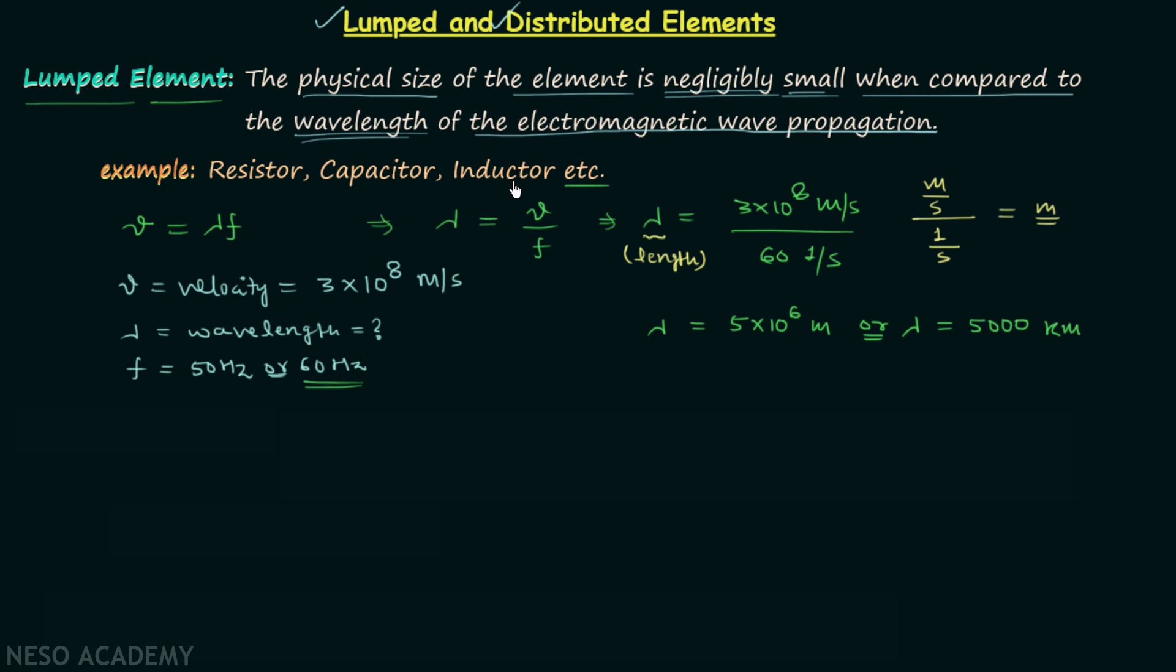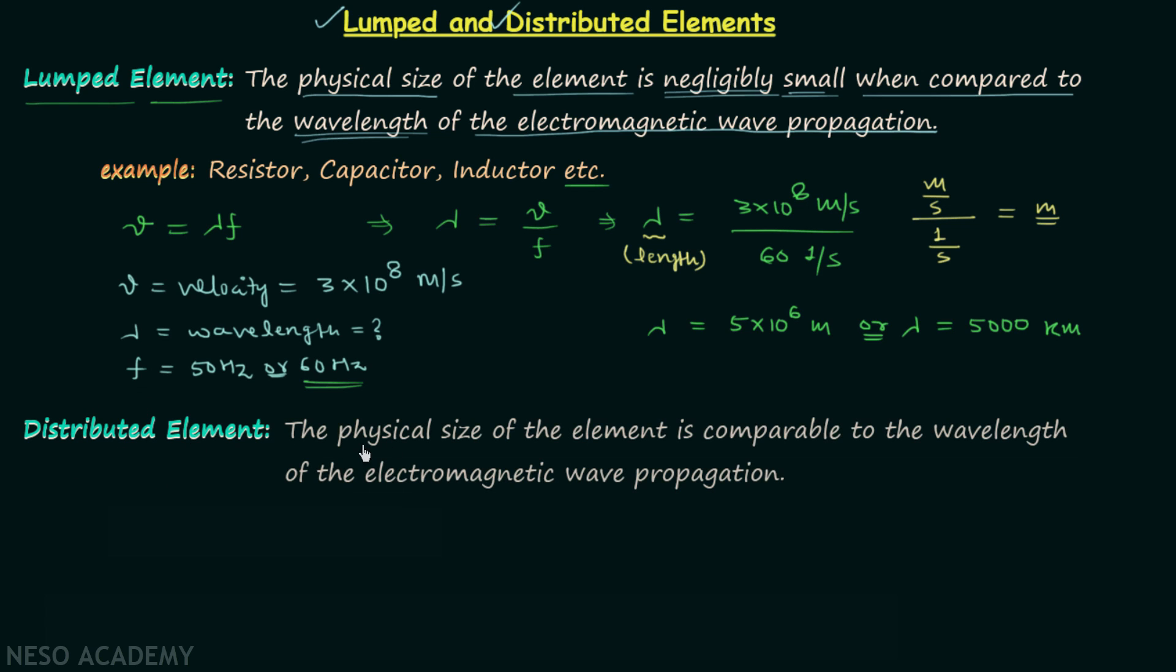Now let us move on to the definition of distributed element. An element is said to be distributed element when the physical size of the element is comparable to the wavelength of the electromagnetic wave propagation.